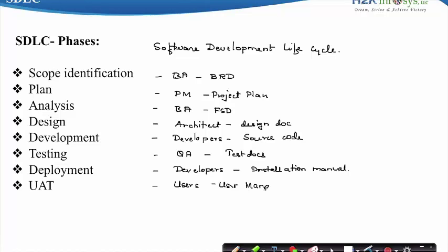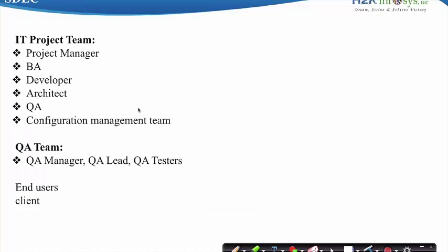These are the 8 different steps to develop the software as per the SDLC, the Software Development Life Cycle. The software is developed by the IT project team that comprises of the Project Manager, who is the head of the IT project team and plans, coordinates, and controls the activities. Then comes the Business Analyst who coordinates between the IT project team and the client team. The Developer or Programmer develops the software, the Architect designs the software, and the QA tests the software. A configuration management team tracks and controls the changes in the software.